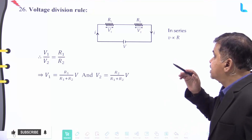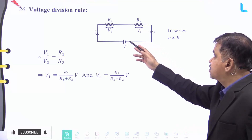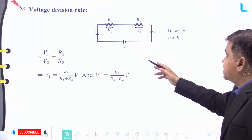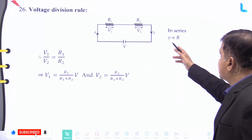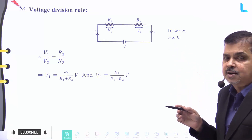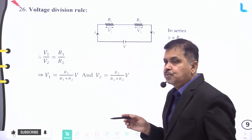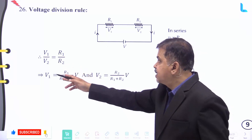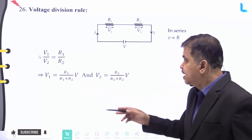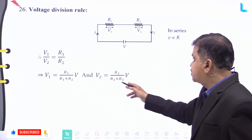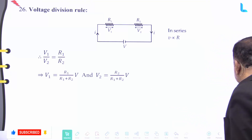For the voltage division rule: R₁ and R₂ are two resistors connected in series with voltages V₁ and V₂ across them, connected to a supply voltage V. In series, voltage is directly proportional to resistance. Therefore V₁/V₂ = R₁/R₂, which gives V₁ = R₁/(R₁ + R₂) × V and V₂ = R₂/(R₁ + R₂) × V.